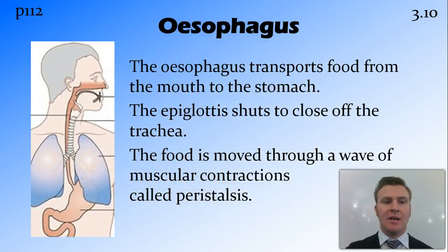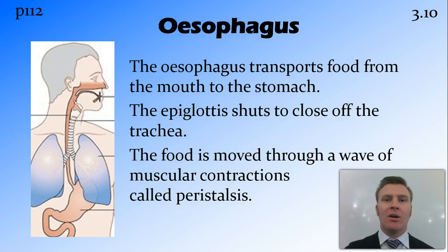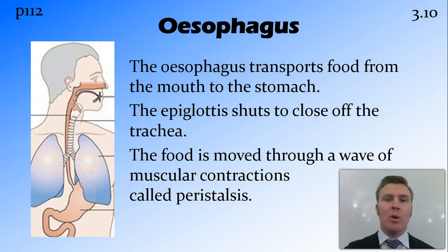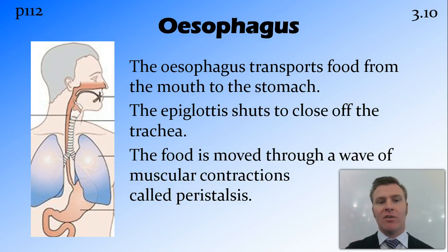The esophagus is the pipe that transports food from the mouth to the stomach. It does this using a process of rhythmic muscle contractions called peristalsis. Part way down the esophagus is the epiglottis. The epiglottis is a flap which controls access into either the trachea or the esophagus. Food goes down the esophagus, air goes down the trachea, and the epiglottis makes sure that those two don't mix.